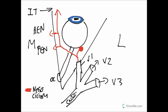The ciliary ganglion is a parasympathetic ganglion where preganglionic parasympathetic nerves synapse with postganglionic fibers. These travel into the eye to innervate two parts: the ciliary body, which is part of the iris and is involved in accommodation from long sight to near sight, and also the sphincter pupillae muscle in the iris, which constricts the iris to control the amount of light entering.